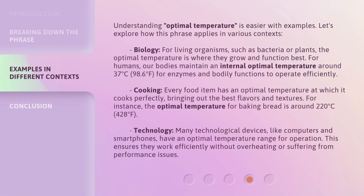Understanding optimal temperature is easier with examples. Let's explore how this phrase applies in various contexts. In biology, for living organisms such as bacteria or plants, the optimal temperature is where they grow and function best. For humans, our bodies maintain an internal optimal temperature around 37 degrees Celsius, or 98.6 degrees Fahrenheit, for enzymes and bodily functions to operate efficiently.